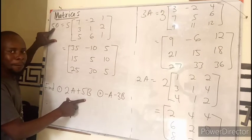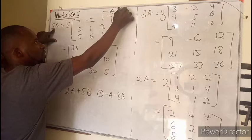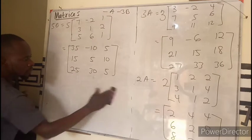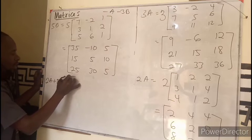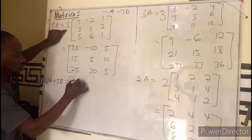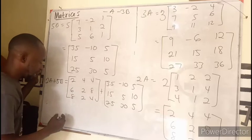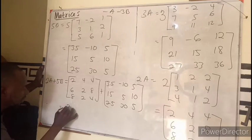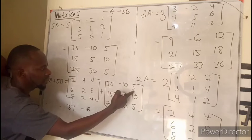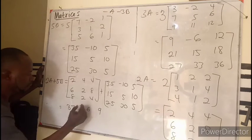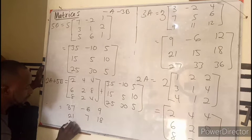Don't forget we are not asked to find separately 2A or 5B, we are asked to find their sum. So this will be added to this. Therefore, your 2A + 5B is going to be adding corresponding entries and that will give you [37, -8, -6; 9, 21, 21; 7, 18, 33].